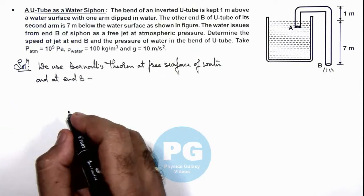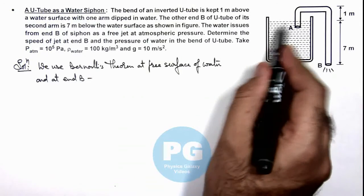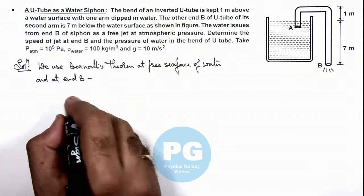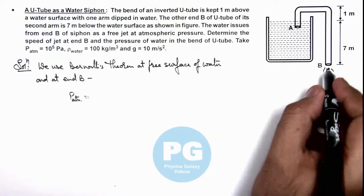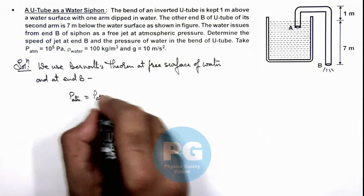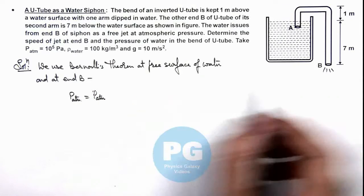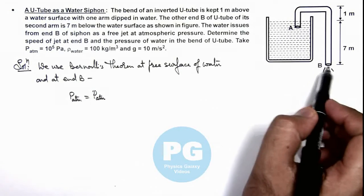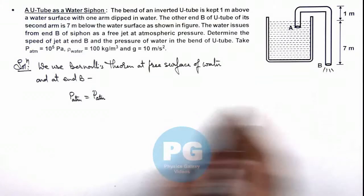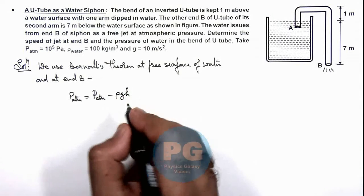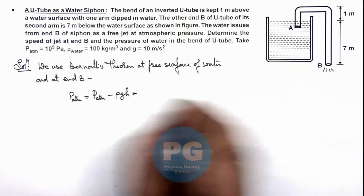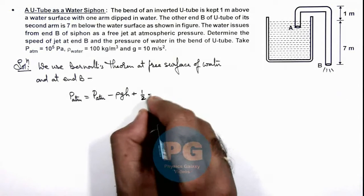Then here we can see on the free surface of water, we consider water to be at rest, so pressure is only P atmospheric. At B, pressure is P atmospheric, and the potential energy per unit volume of the fluid with respect to this water level is minus ρgh.